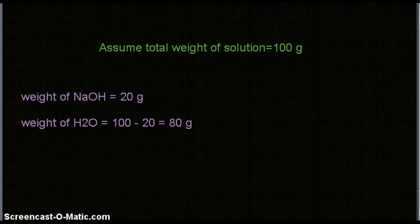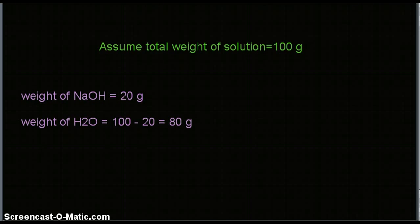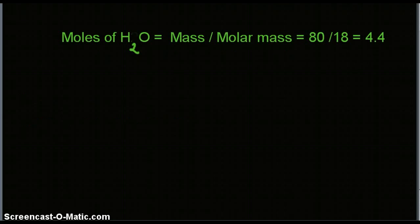Now the second stage would be to calculate the number of moles from the given weights of NaOH and H2O. The moles of H2O would be mass of H2O divided by molar mass of H2O. Since in the given solution the mass is 80 and the molar mass is 18, the number of moles of water is 4.4.